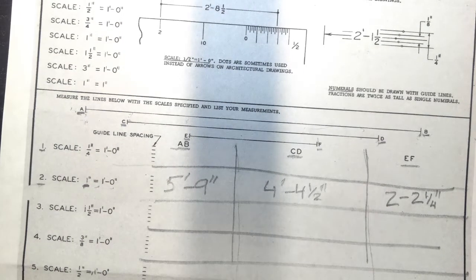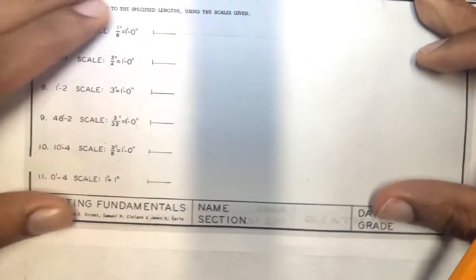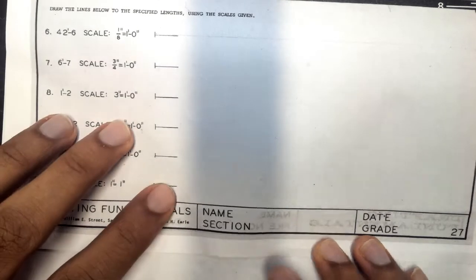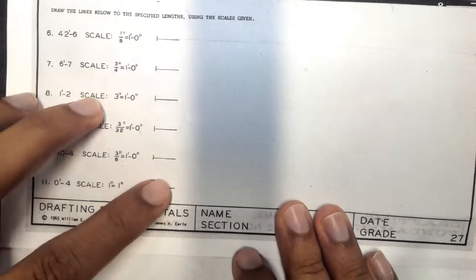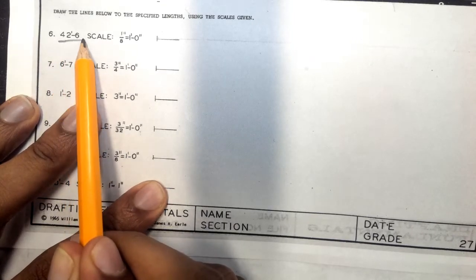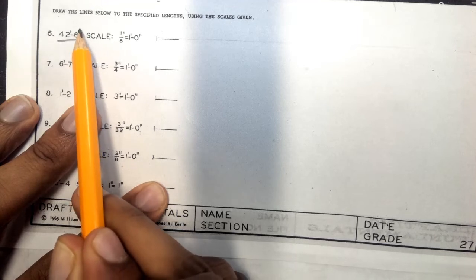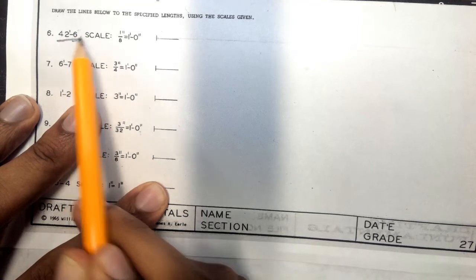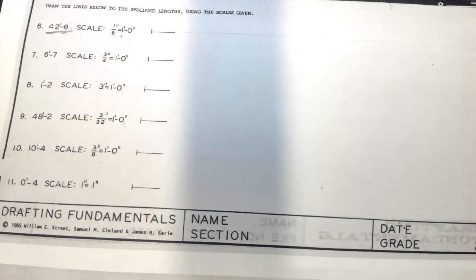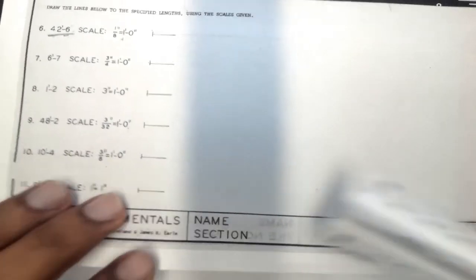Okay, let's move to the second half of the page. For the second half of the page, I want you to understand that on this worksheet, we're also going to be drawing lines to specific lengths. So the length provided is 42 feet and 6 inches. Notice that there's no inch sign here, but it is 6 inches because the feet is given. Eighth inch equals 1 feet is the scale that we're using. So again, I'm going to be turning to the scale that says eighth of an inch.